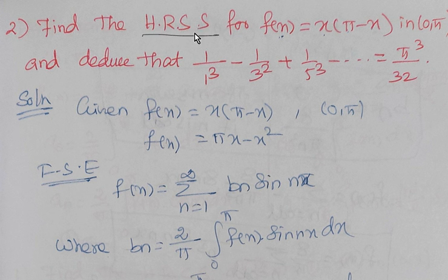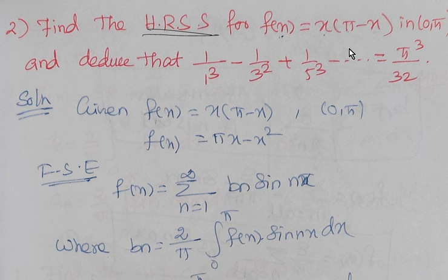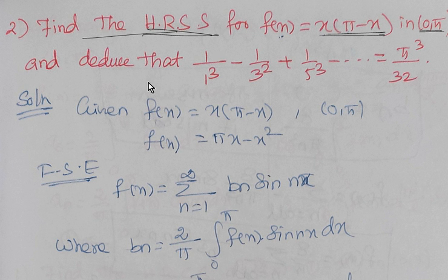Half Range Sine Series. So, this is 2 problems. We have Fourier Series Expansion, Half Range Series. If you look at the previous video, we will check out the playlist. So, what are we going to talk about? Find the Half Range Sine Series for f(x) equal to x(π - x) in [0, π]. The range of x(π - x) is Half Range Sine Series.